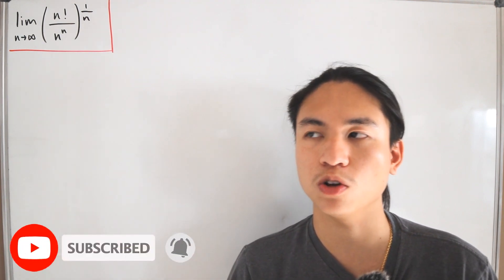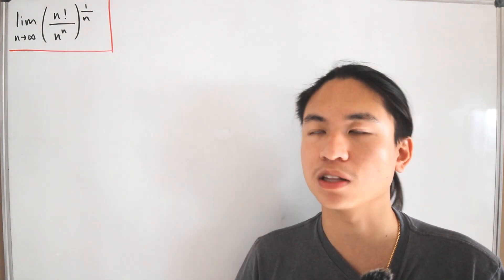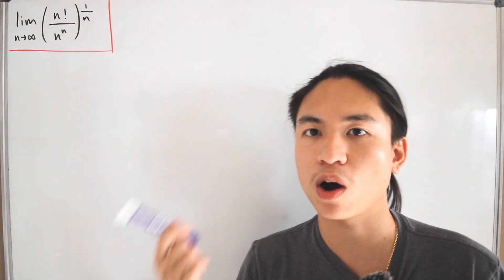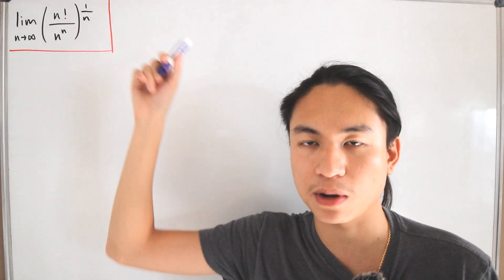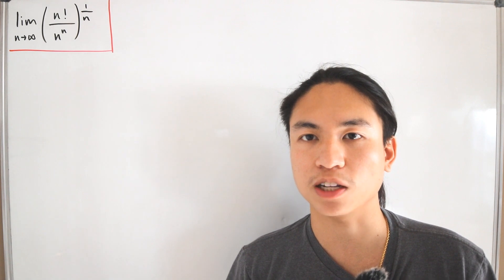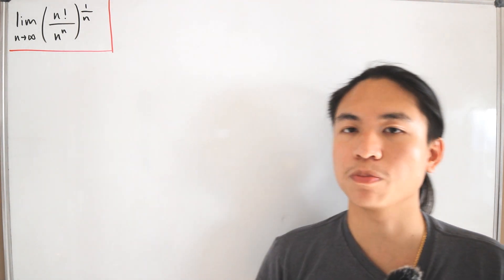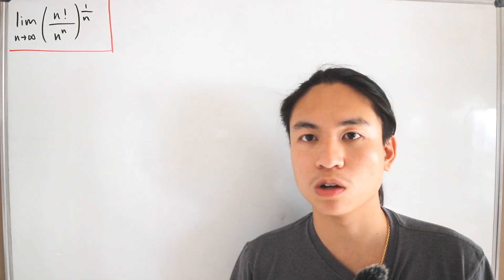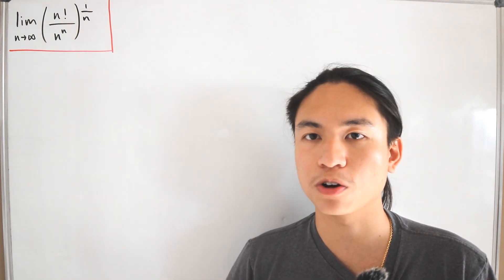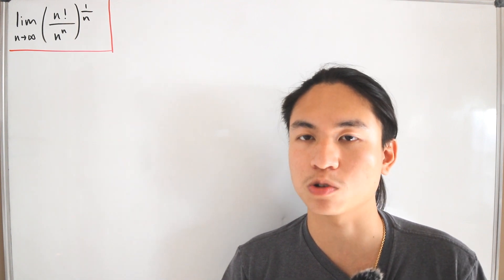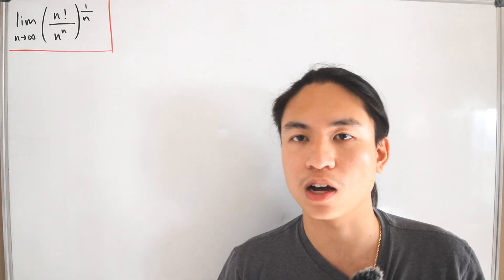I actually did a video similar to this, but the limit was written as the quantity 2n factorial divided by n to the power n multiplied by n factorial, then raised to the same exponent. If you want to check that video out, the link is in the description below. Both problems use the same procedure, but that video had more workload than this one.